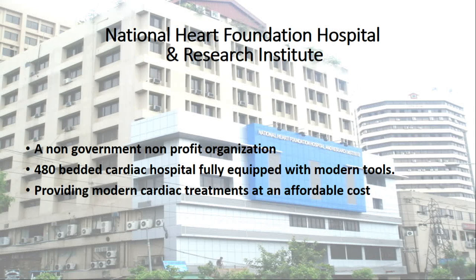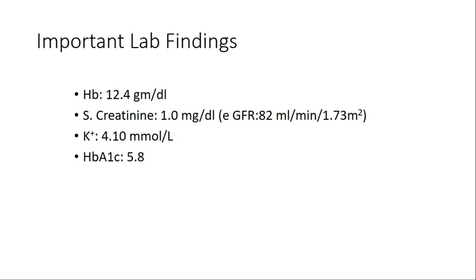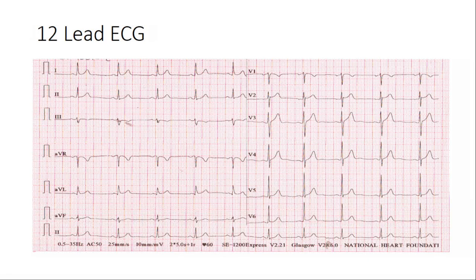Our patient today is a 57-year-old male suffering from chronic stable angina. He had a history of stroke four years back, he's a very heavy smoker, hypertensive with poorly controlled blood pressure. His blood biochemistry was pretty much normal.